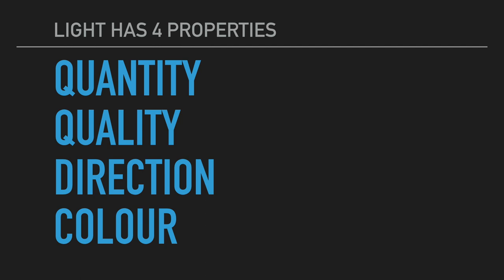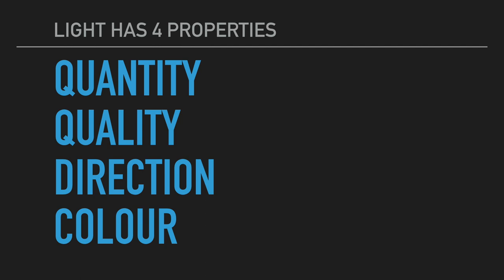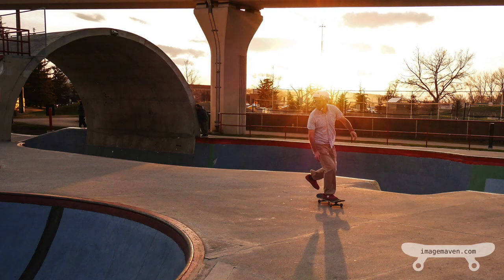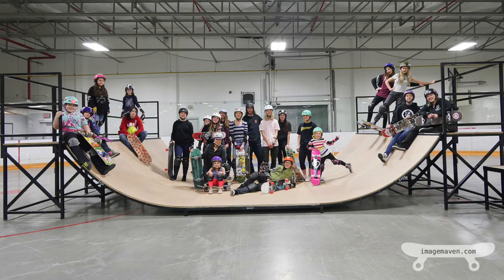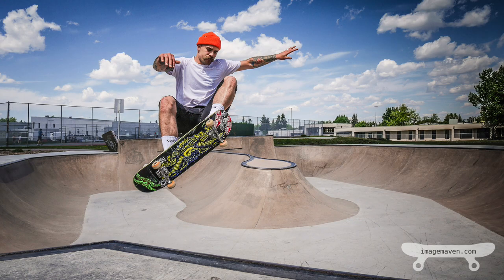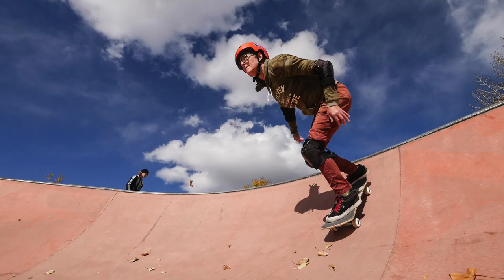Quantity, quality, direction, and color. Quantity refers to the amount of light. Low light is sunrise or sunset, nighttime, and indoors. Bright light is midday sunshine, using your flash, or other lighting.